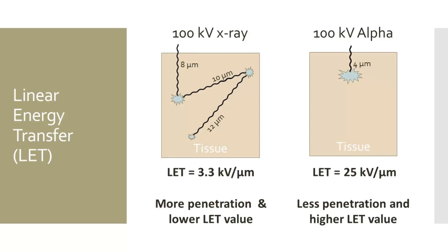We can tell from this example that alpha linear energy transfer is 7.5 times greater than that of the X-ray linear energy transfer. The other observation we can make is regarding the relationship of penetration and LET. With the X-ray energy, the energy penetrated further for a total of 30 microns and the LET was 3.3 kilovolts per micron, compared to the alpha energy that penetrated only 4 microns, and since all of that energy was deposited in a short distance, the LET was higher at 25 kilovolts per micron.